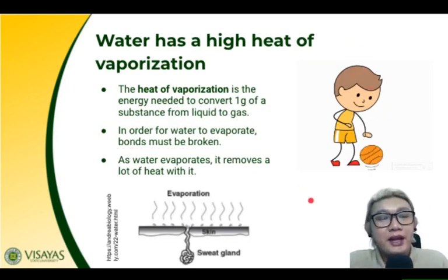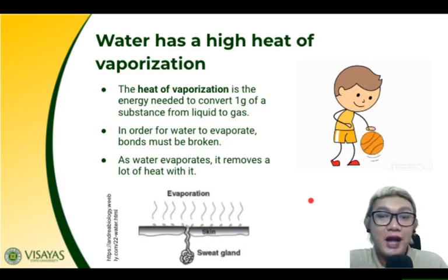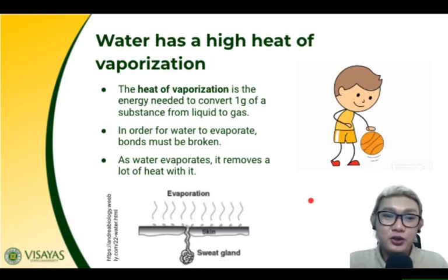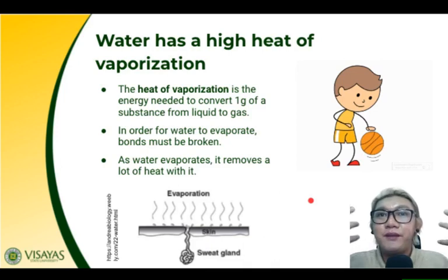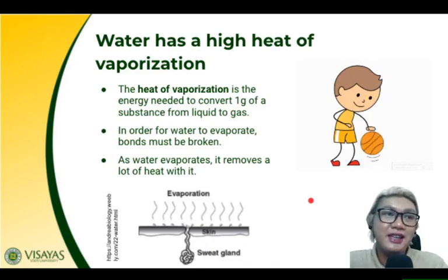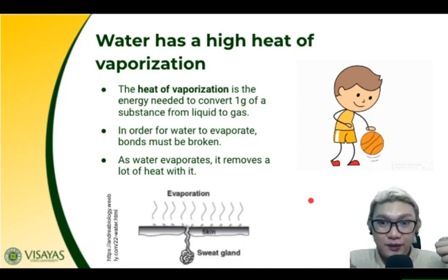Another property is the high heat of vaporization of water. Heat of vaporization is the energy needed to convert one gram of a substance from liquid to gas. In order to make water evaporate, you need to break the hydrogen bonds, and breaking those hydrogen bonds requires enormous energy. So since it is not easy to evaporate water, we will not be easily dehydrated.